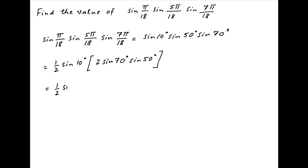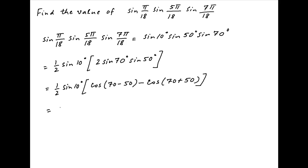The term inside the brackets can be written as cos of 70 minus 50, minus cos of 70 plus 50. Therefore the value of the given expression is equal to half of sine 10 degrees times, in brackets, cos of 20 degrees minus cos of 120 degrees.